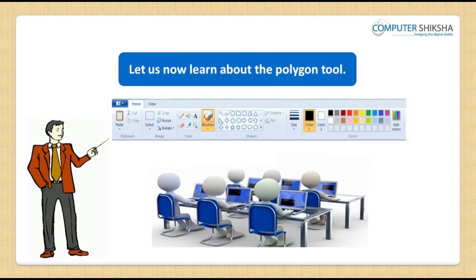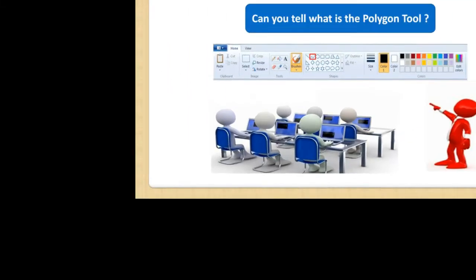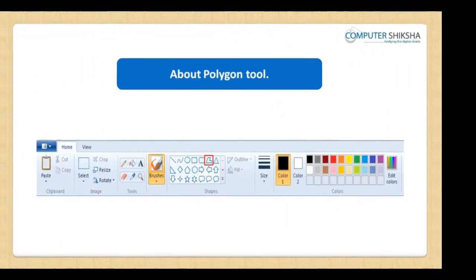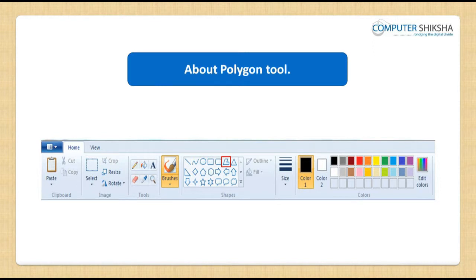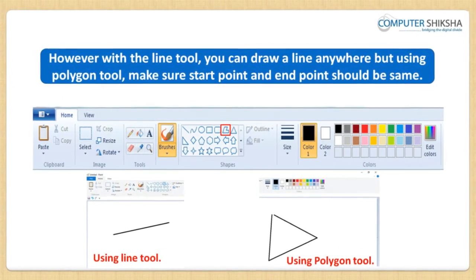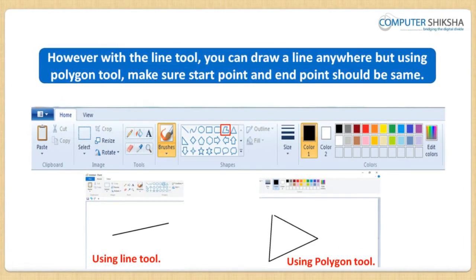Let us now learn about the polygon tool. Can you tell what the polygon tool is? The polygon tool functions like the line tool. However, with the line tool, you can draw any type of line anywhere. But when you use the polygon tool and draw, you have to make sure that the starting point and the end point are the same.